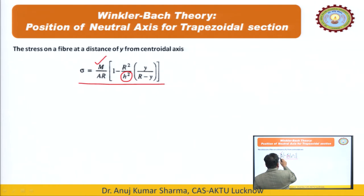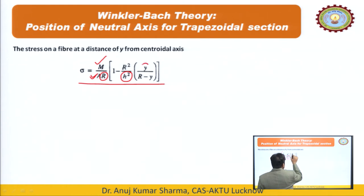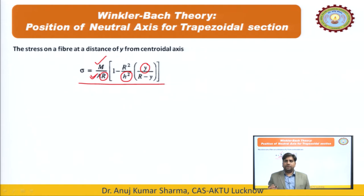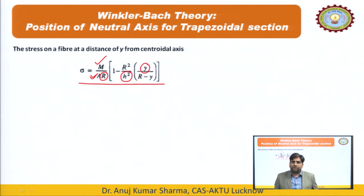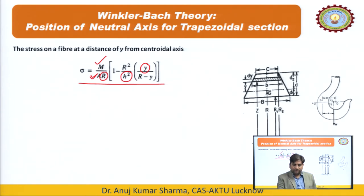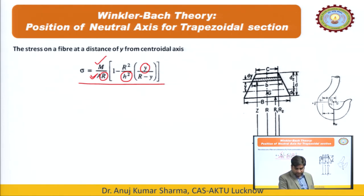M is the bending moment, A is the area of cross section, R is the radius of curvature — all these are constants. And y is the fiber distance from the neutral axis or centroidal axis where our fiber is located. We can calculate y as well. For the neutral axis, when y = 0, we can find the position of the neutral axis.